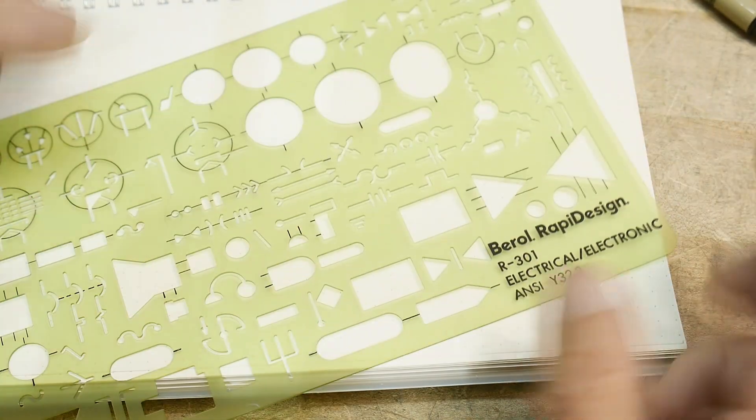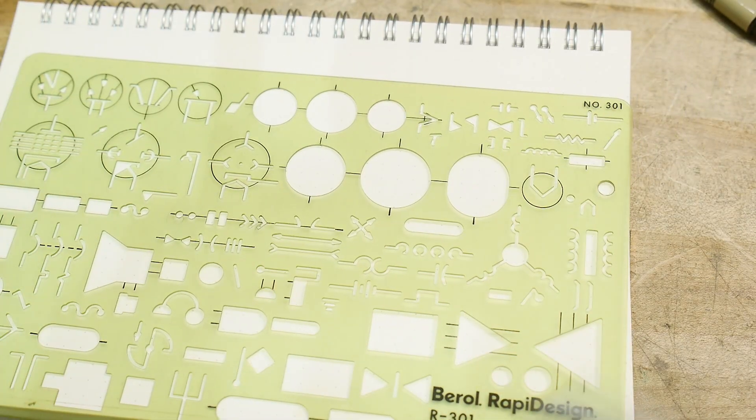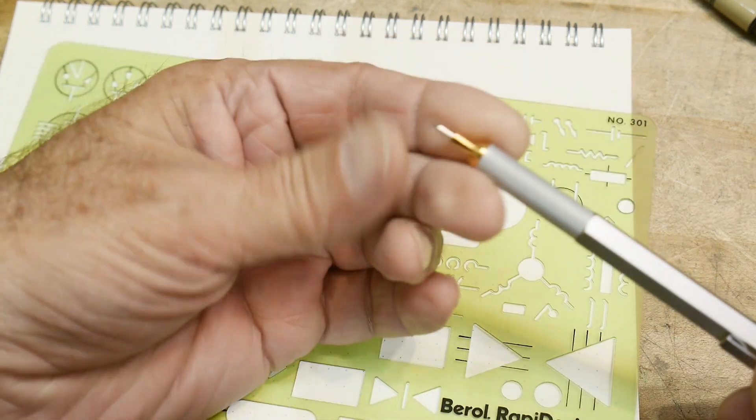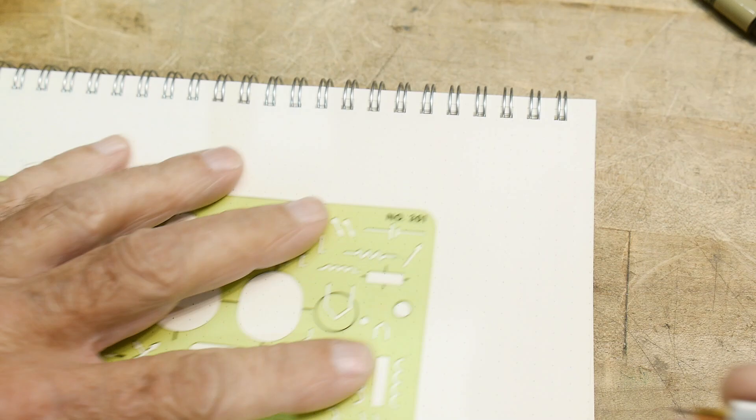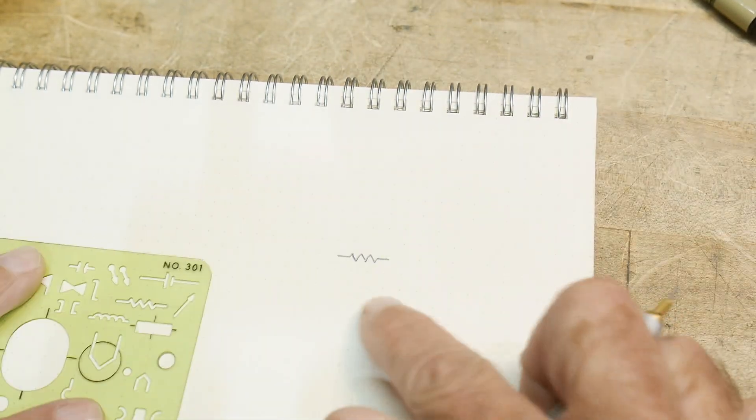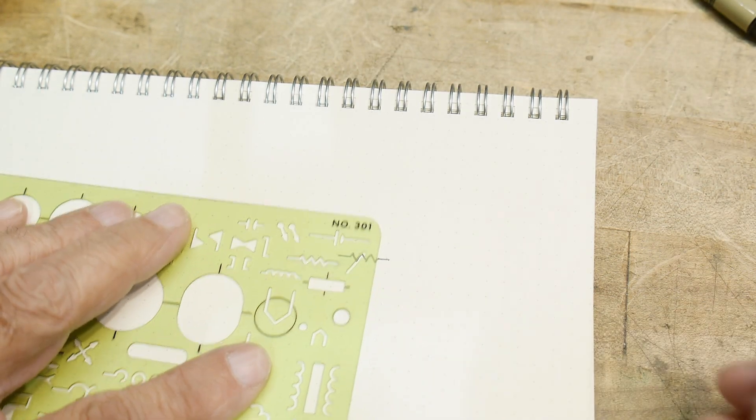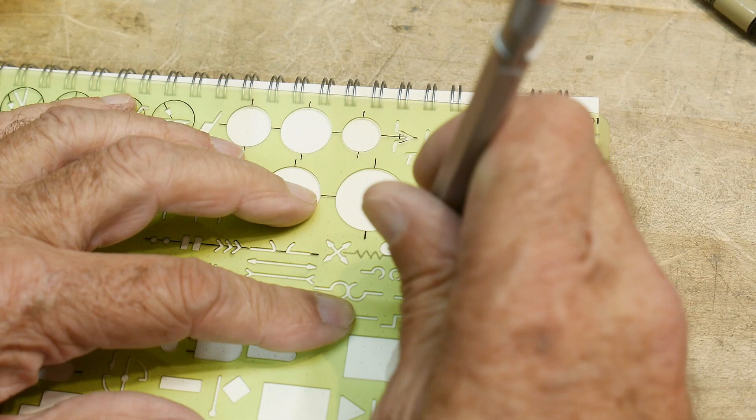So I did a video once on all of these templates you can get, and they're great, but they require a thin pencil lead. So like here's the resistor here, and so it turns out kind of nice. Where's it? Here's a capacitor.